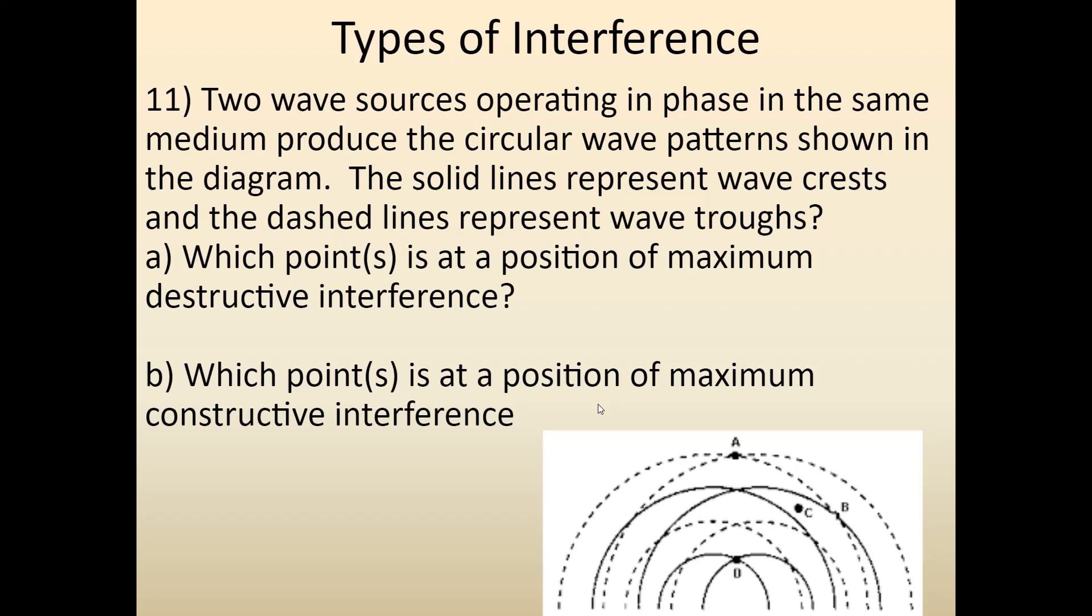Question B, where it says which point is maximum constructive interference? We're looking for two lines that cross that are the same thing, both solid and both dotted. The only time that would occur is at point A and point D. So both of these are constructive interference. This would be with two crests together, and this would be two troughs together.